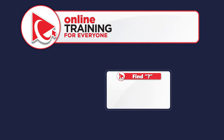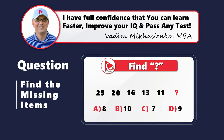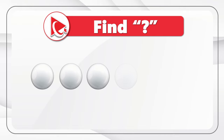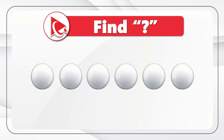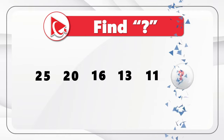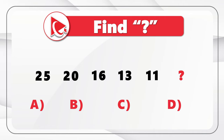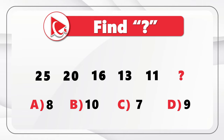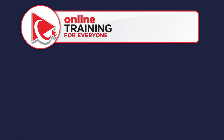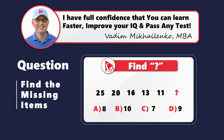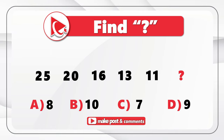Pattern questions are easy to understand but sometimes not easy to solve. You're presented with the sequence 25, 20, 16, 13, 11, and need to find the missing next number. Choices: A is 8, B is 10, C is 7, D is 9. The concept here is decrement — the next number equals the previous number minus a decrement, and the decrement decreases by 1 with each step. Starting: 25 − 5 = 20, 20 − 4 = 16, 16 − 3 = 13, 13 − 2 = 11, 11 − 1 = 10. The correct answer is Choice B, 10.